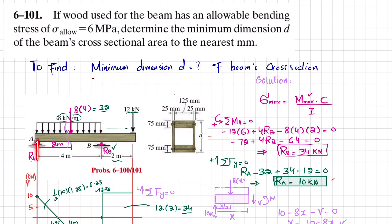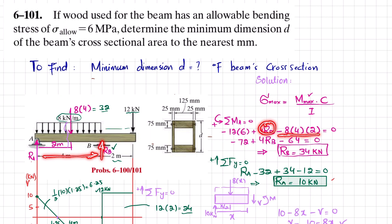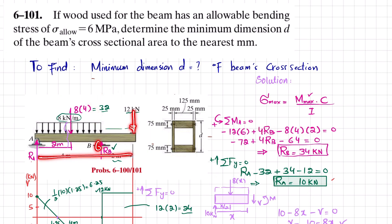Removing the pin support at point A gives reaction force Ra, and removing the roller support at point B gives reaction force Rb. Using equilibrium: the sum of all moments about point A equals zero. The distributed load converts to a point load of 32 kN acting at 2 meters, producing a clockwise (negative) moment: minus 8×4×2. The moment due to Rb at 4 meters is positive (counter-clockwise). The third moment is 12 kN at 6 meters, clockwise, so minus 12×6.